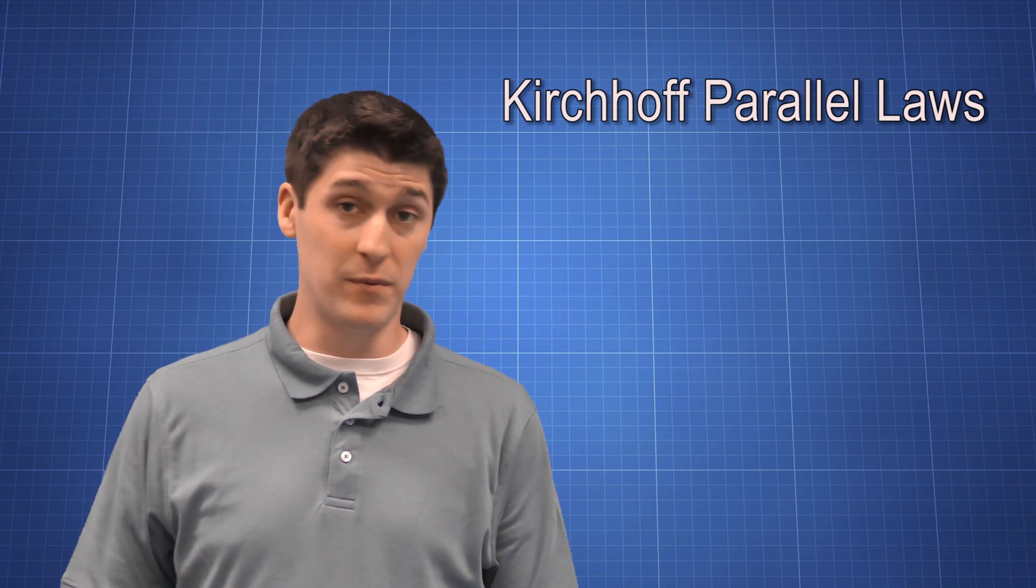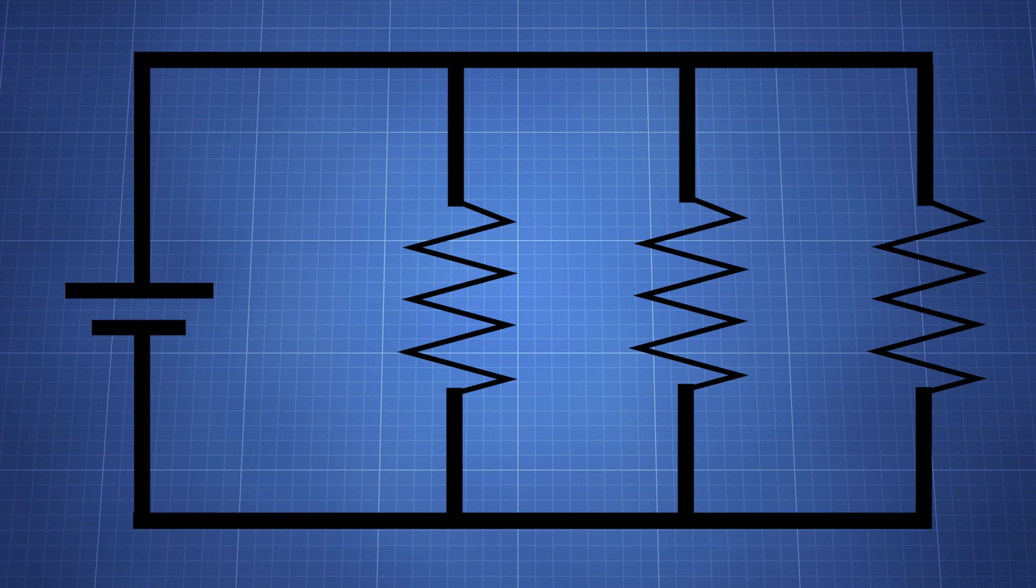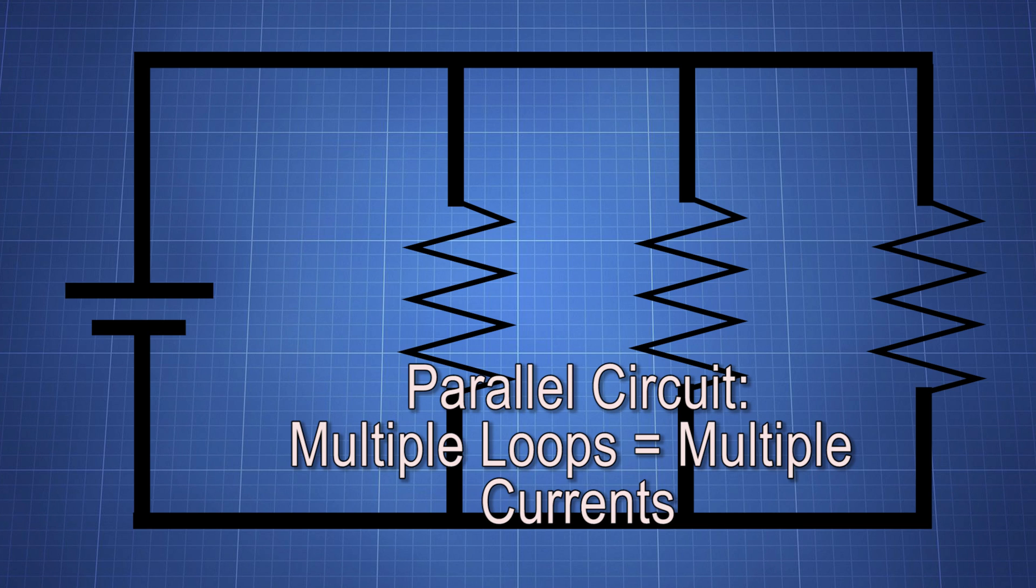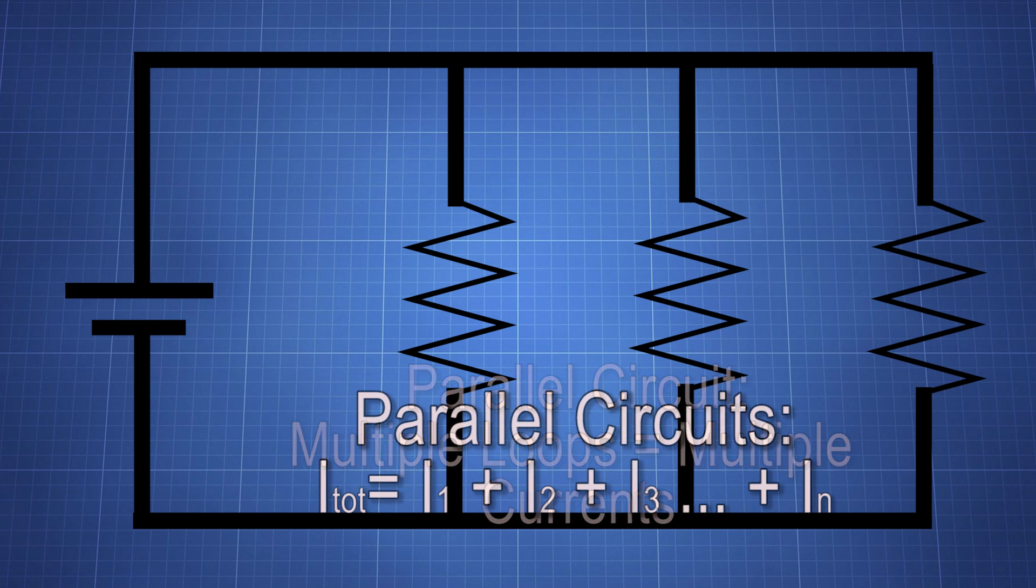In a parallel circuit, things get a little bit more complicated because it's multiple loops. Because there are multiple loops, there are multiple currents. But they all should add up to the current of the source. So we get this cool equation: IT equals I1 plus I2 plus I3 plus however many other loops we have.